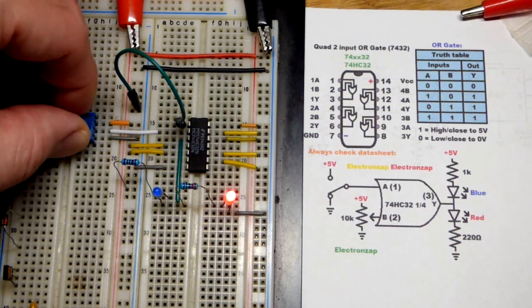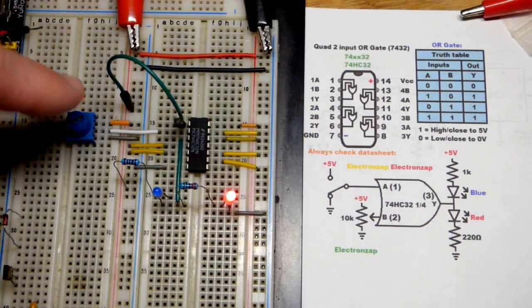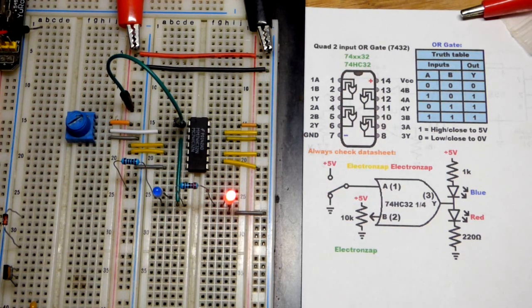So I'll put that back high though. So we tried out three states there. Now we'll go to the fourth one where they're both high and the output is high. Basic OR gate rules.